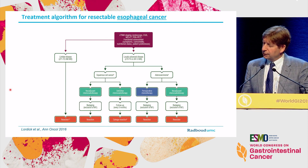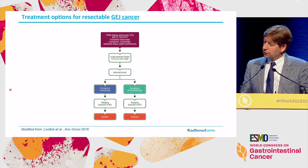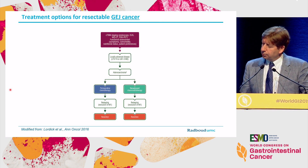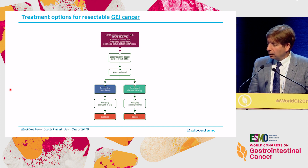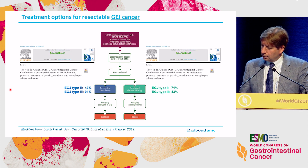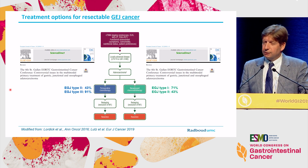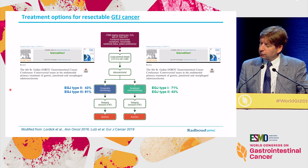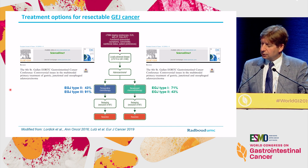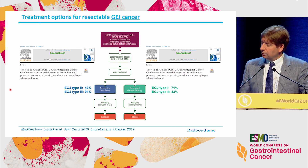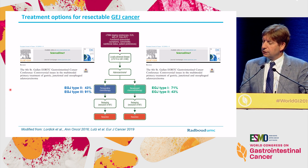If you look at the treatment algorithm for resectable esophageal cancer with a focus on GEJ junction tumors, there are indeed two approaches that can be followed: perioperative chemotherapy and preoperative chemoradiotherapy. At the multidisciplinary expert panel discussion at St. Gallen last year, there was a vote on the preferred treatment in the different subtypes of EG junction tumors. For type 3 EG junction tumors, there was quite some consensus on the role of perioperative chemotherapy, while for the distal esophageal type 1 tumors, there was a strong preference for neoadjuvant chemoradiotherapy. For type 2, there was a division between the two approaches.